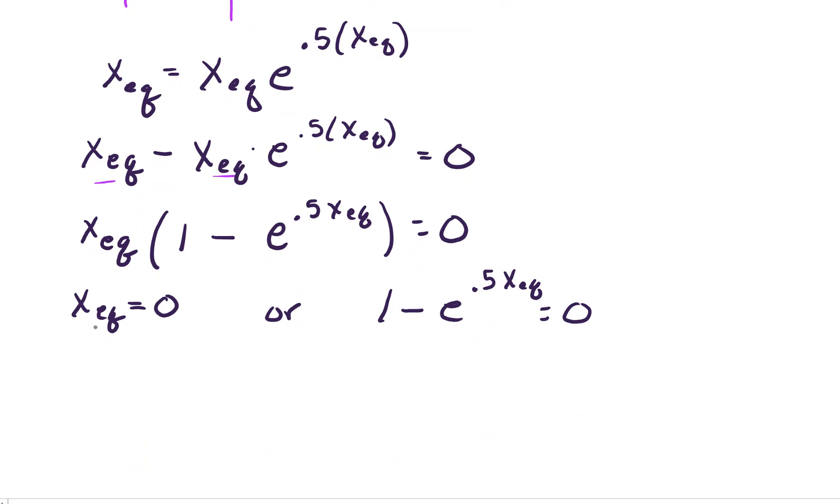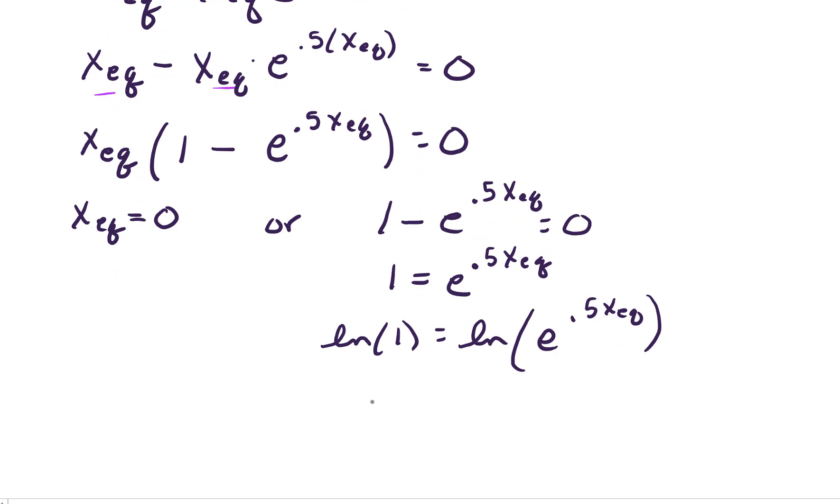Well we found one of our equilibrium points which is 0 so that was great. We still have a little work to do over on the right hand side. So let's add and we get 1 equals e to the 0.5 x sub eq. Taking the natural log of both sides, we have on the left hand side natural log of 1 is 0. And on the right hand side natural log of e to the 0.5 x sub eq. Well that's just 0.5 x sub eq. Continuing from here we can divide by 0.5 so we're left with 0 equals x sub eq. And we only had one fixed point in this problem namely 0.